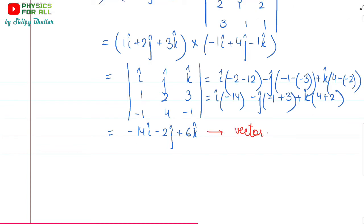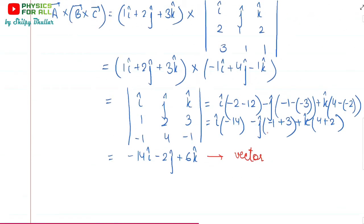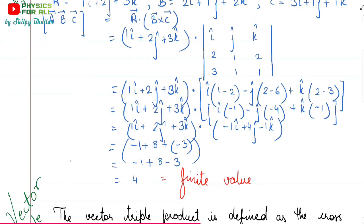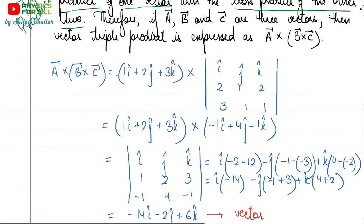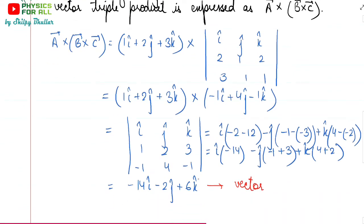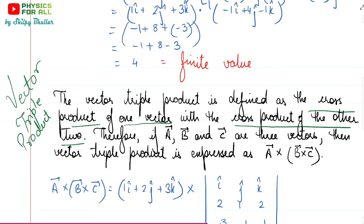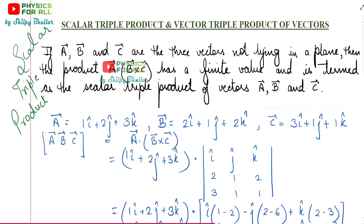The final result is −14 i-cap − 2 j-cap + 6 k-cap, which is a vector. So the vector triple product of three vectors gives us a vector, whereas the scalar triple product gives us a scalar. The meaning is always in the name: scalar triple product of three vectors gives a scalar (we got 4), whereas vector triple product of three vectors gives a vector.